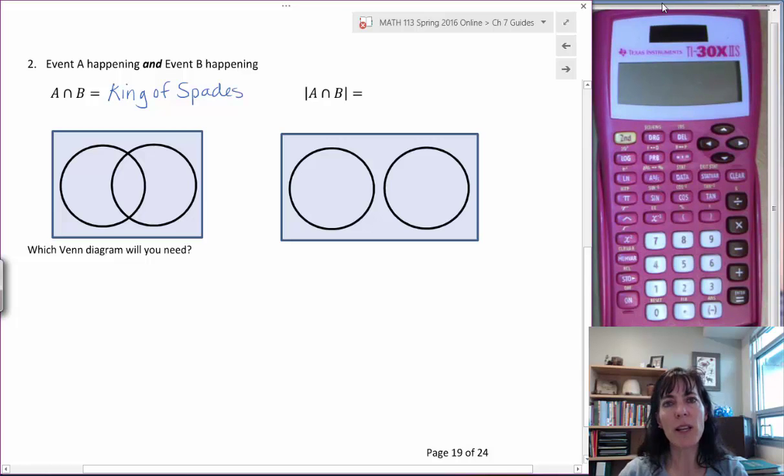That is the only card that is a king and a spade simultaneously. And still the same Venn diagram because there's still an intersection with 1 in it and a 3 and a 12 over here.